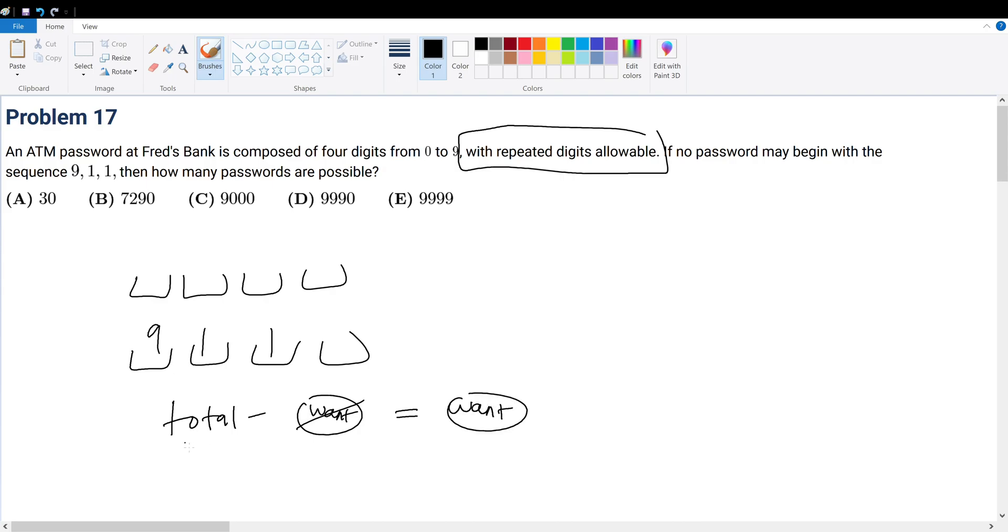So let's find the total number of passwords that are available. Well, the total number of passwords, we have four digits, right? And every digit can be 0 to 9, right? Since repeated digits are allowed, that means how many possibilities do we have for each digit?